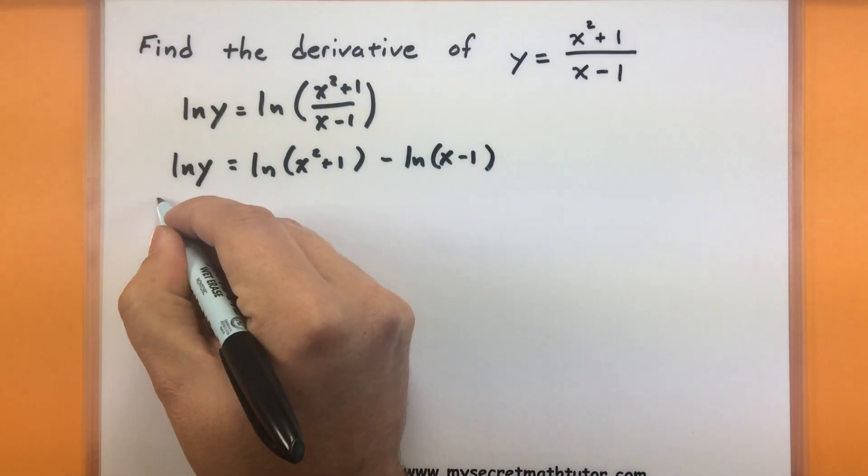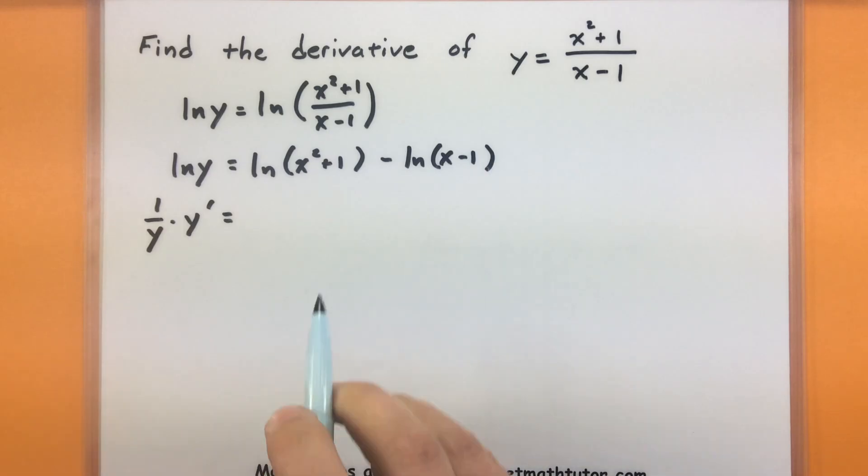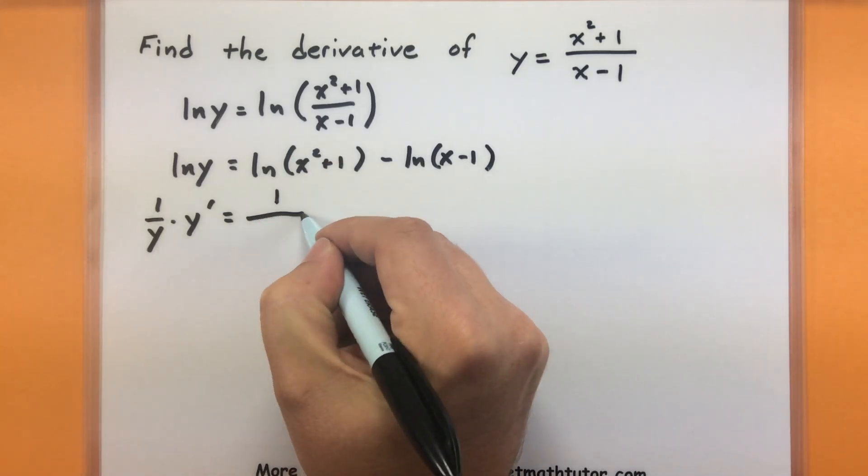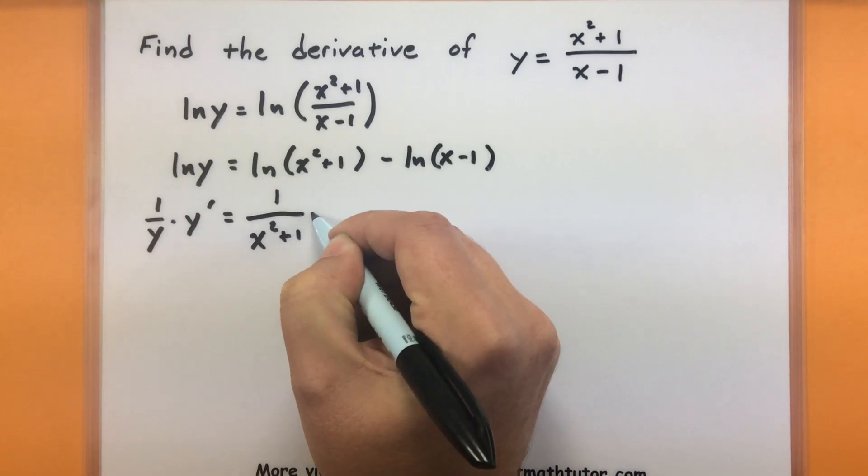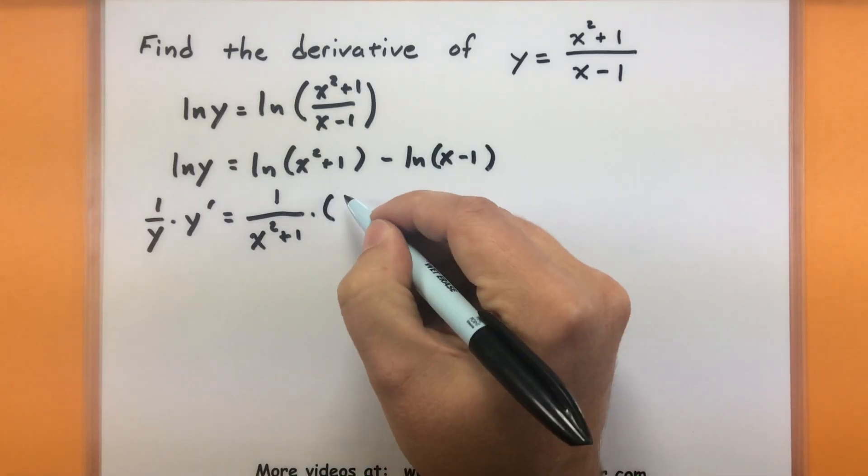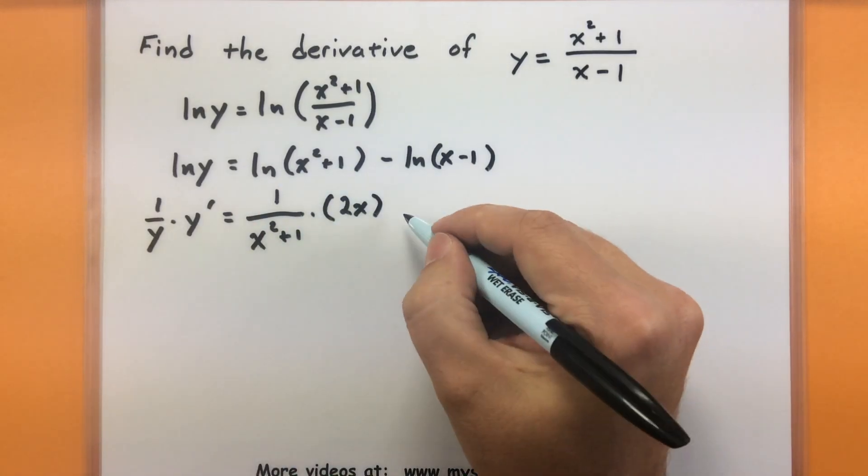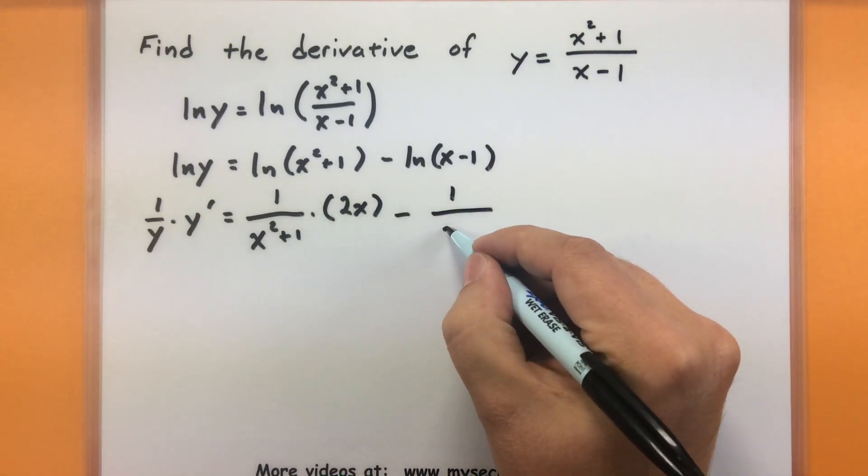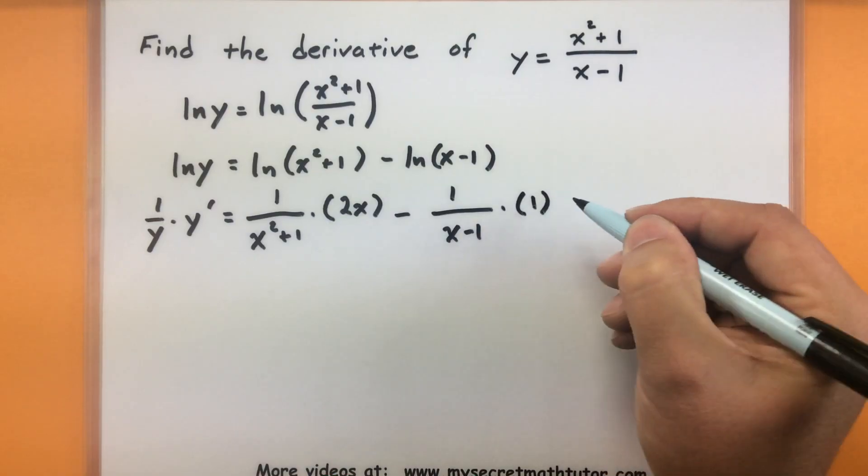Over here, the derivative, we're doing this implicitly. So I have 1 over y multiplied by y prime. And over here, to take its derivative, I'm going to have to start using my chain rule. So the derivative of natural logs, well, the derivative of the outside is 1 divided by, here's my inside function, x squared plus 1, multiplied by the derivative of the inside, which is just a 2x. So that takes care of the derivative of that. On to the next one. Derivative of the outside, 1 over, inside just as it is, multiplied by the derivative of the inside, that'd be just a 1.